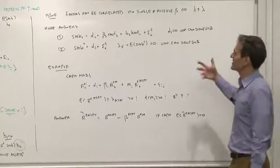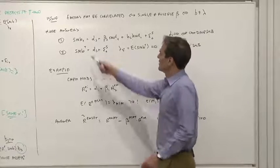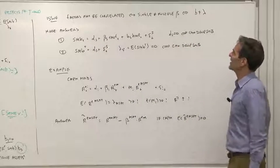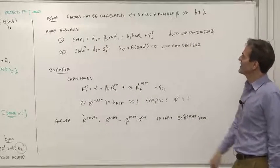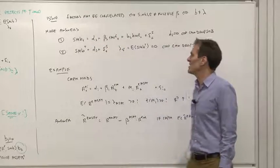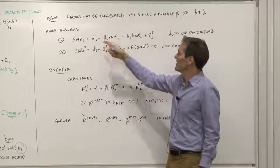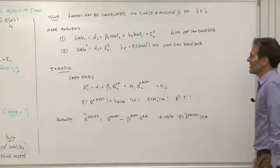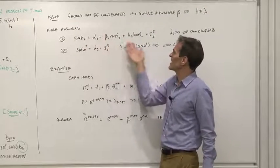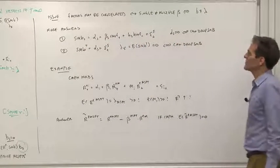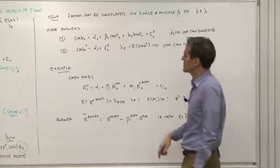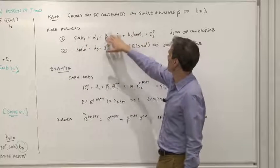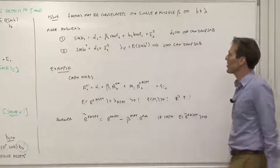So that suggests more answers, practical answers to this question. Put SMB on the left-hand side. Let us run SMB on the market and HML. If SMB can be priced by the other assets, if the alpha of SMB is zero, then in fact we can drop S from the asset pricing relationship. You can see what we're doing is we're orthogonalizing. We're taking care of that correlation between SMB and the other assets, and that's another way to state the same relationship.